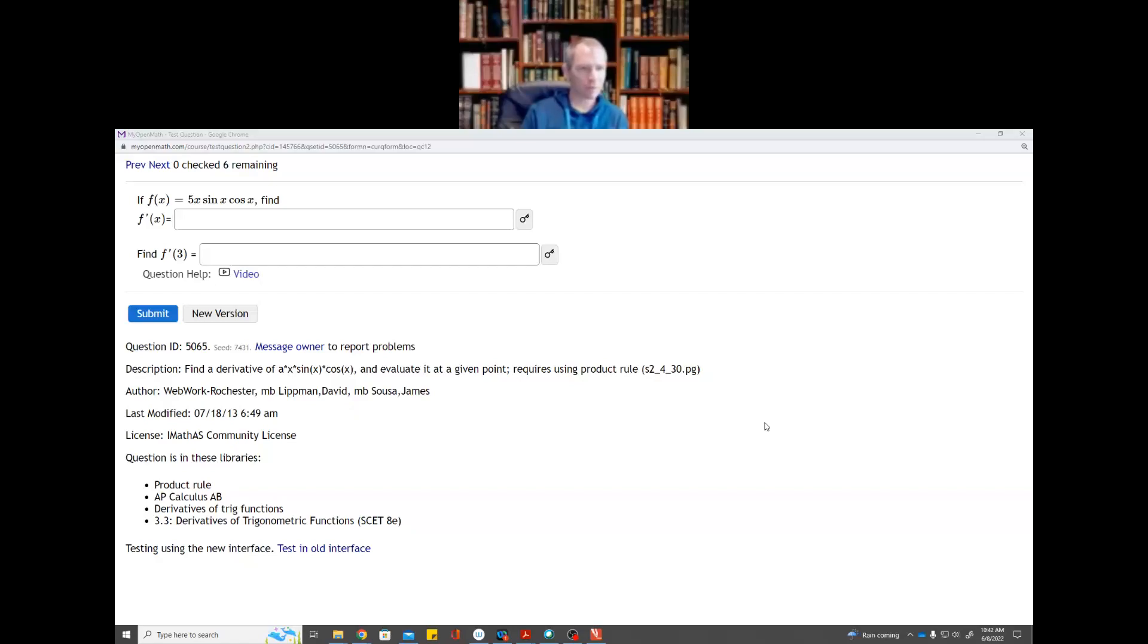So this is 3.5 homework question 12. If f(x) is 5x sine x times cosine x, find the derivative.